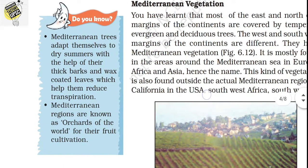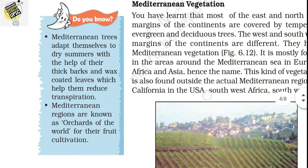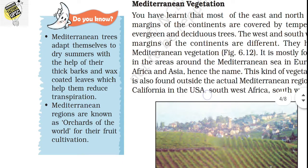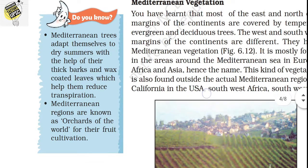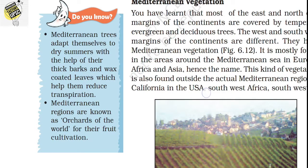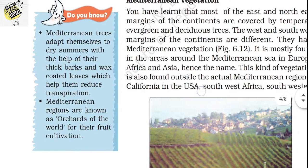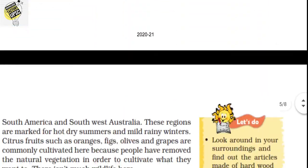Mediterranean trees adapt themselves to dry summers with the help of their thick barks and wax-coated leaves, which help them reduce water transpiration. Mediterranean regions are well known as the 'orchards of the world' for their fruit cultivation.